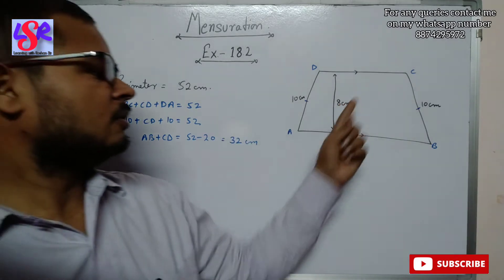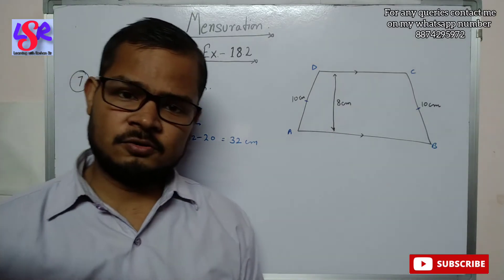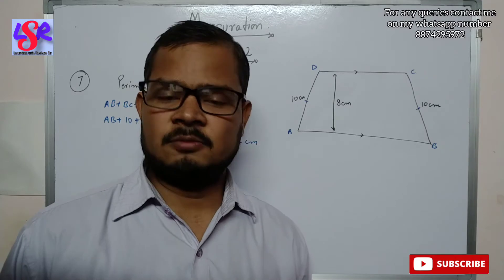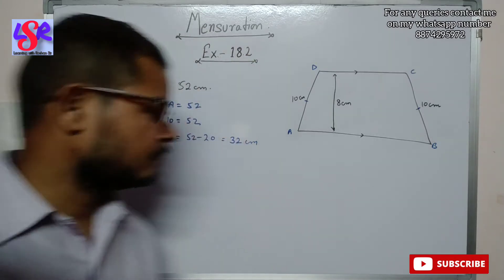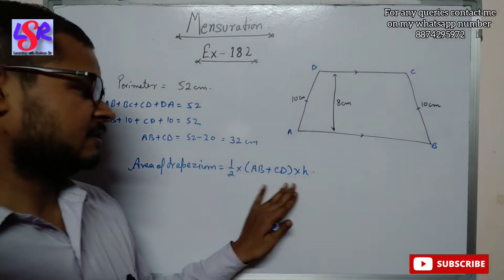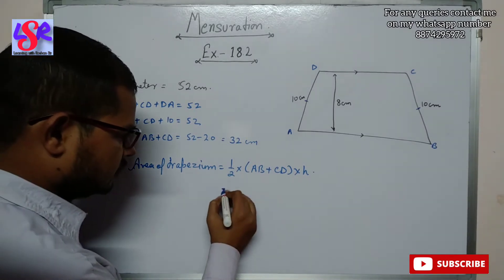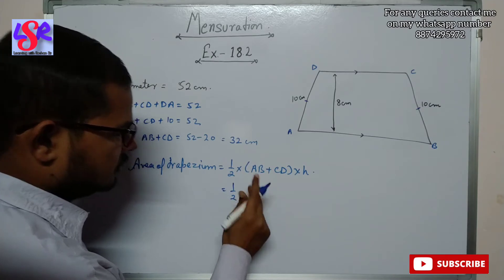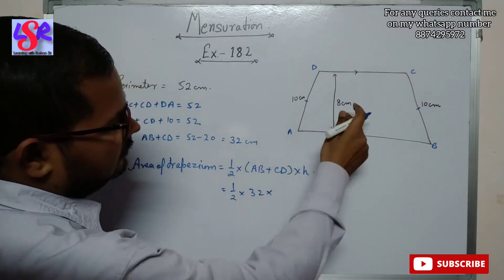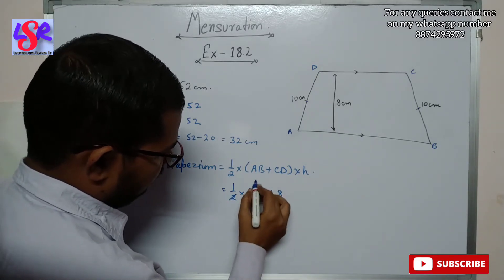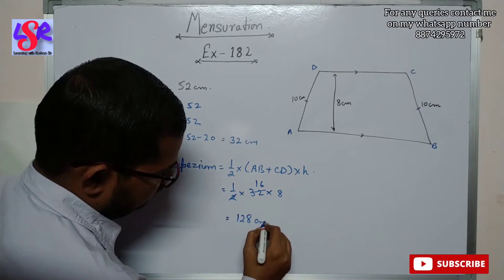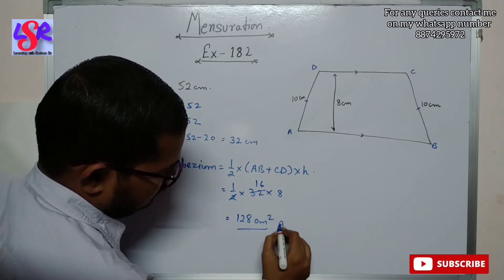We have got the sum of the parallel sides as 32 centimeters. The area of a trapezium is half times the sum of parallel sides times height. So area = (1/2) × 32 × 8 = 128 centimeters square as the answer.